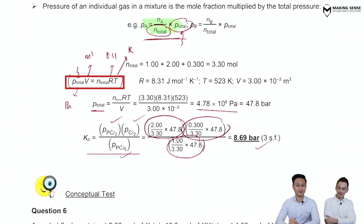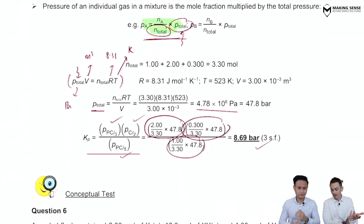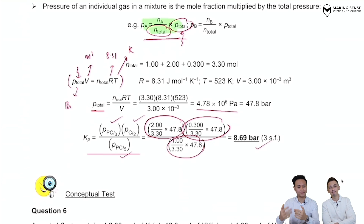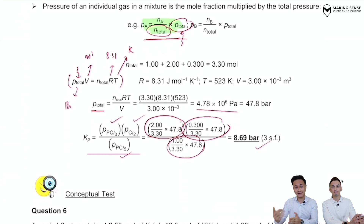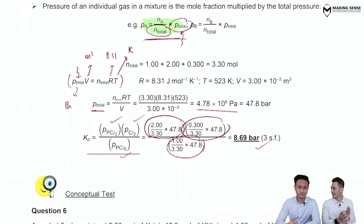In summary, Kp is more involved than Kc. You need to find individual pressures of gases, which usually requires Dalton's law, and occasionally the ideal gas equation to find P_total. The value of Kp or Kc tells us about the extent of the reaction — a large Kp or Kc means a lot of products, and a small value means mostly reactants.